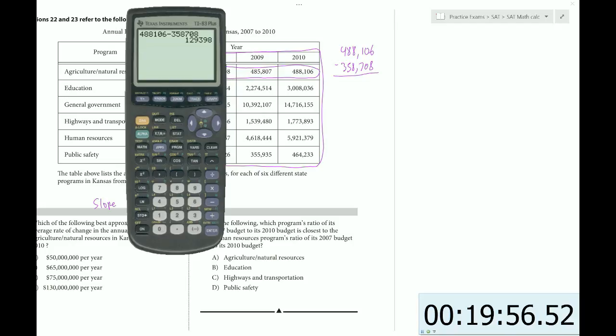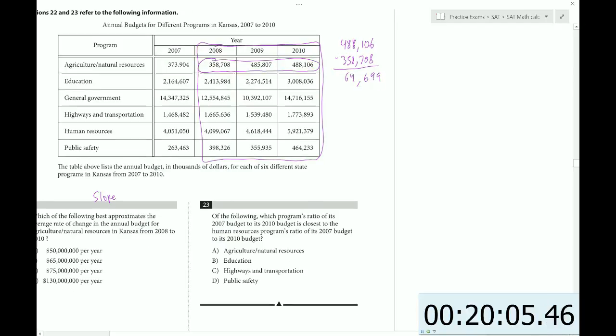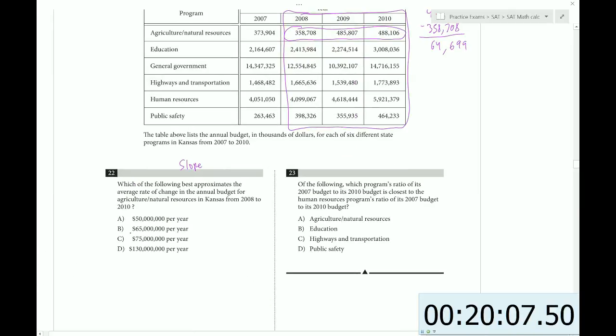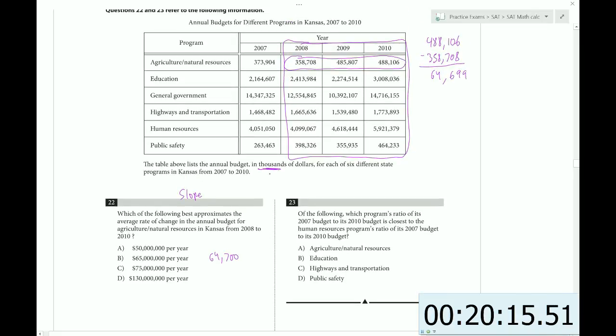That equals this, then we divide that by two, and we get 64,699. So about 64,700. And notice that these are in thousands of dollars. So we have to add a thousand onto that. And that gives us choice B.